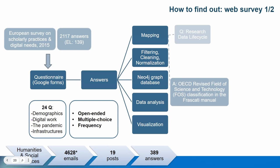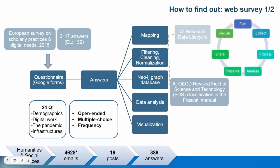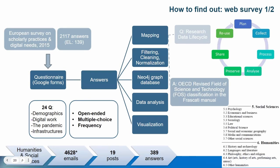At the beginning of data processing, all questions were mapped to the research data life cycle: collecting, processing, analyzing, preserving, sharing, and reusing — though the planning stage was not included. All responses related to scientific fields were categorized according to the revised Field of Science and Technology classification in the Frascati Manual. Since scientific field was a multi-choice question, the final number of disciplines exceeds the number of respondents.